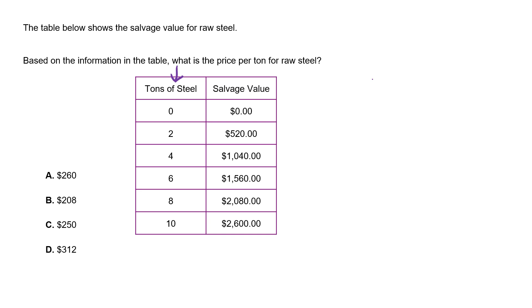Which means if you don't bring them any, you don't get any. If you have two tons of steel, you make $520. Four tons of steel, you make $1,040, and so on.